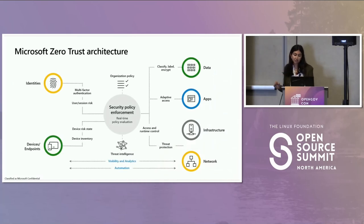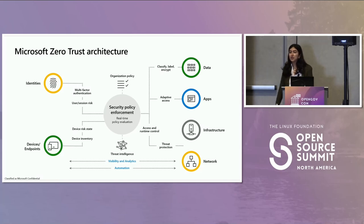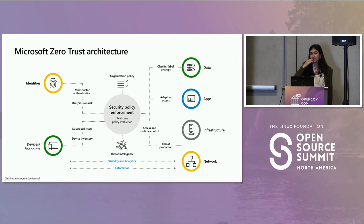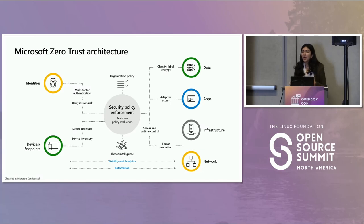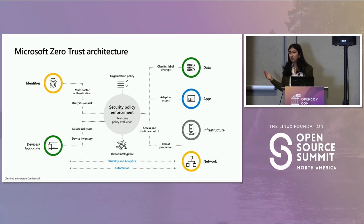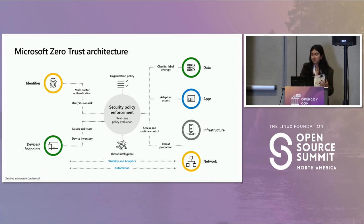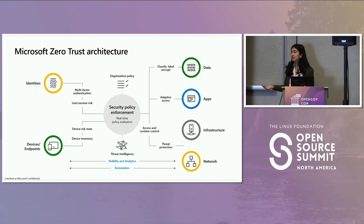This is the Zero Trust architecture slide that I'm sure everyone has seen. When we think about Zero Trust, it's really a security strategy — an end-to-end architecture, not a solution we pop into our environment or a product. There are three principles of Zero Trust: verify explicitly, use least privilege, and assume breach. Assume breach is the most interesting one — it's a complete mindset shift. We used to think about how to keep enemies out. Now we accept that they are already in, and we focus on segmentation and workload setup to prevent lateral movement and minimize the attack surface.